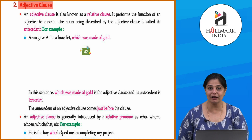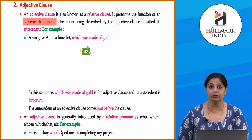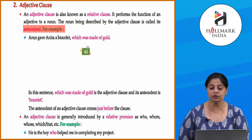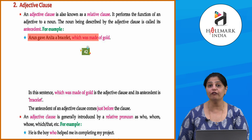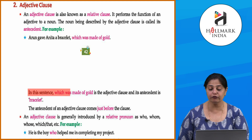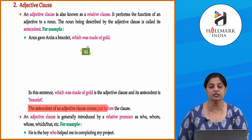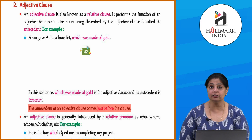Do the rest of the exercise by yourself — reread the concept and then do the exercise. Now let's look at the adjective clause, also known as the relative clause. It performs the function of an adjective, describing a noun. For example, 'the bracelet which was made of gold' — 'which was made of gold' is the adjective clause and its antecedent is 'bracelet.' The antecedent comes just before the clause.